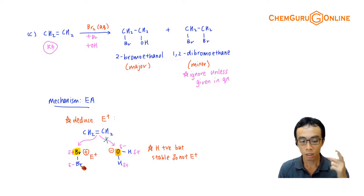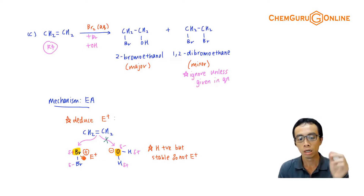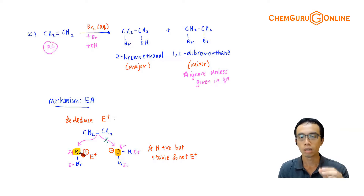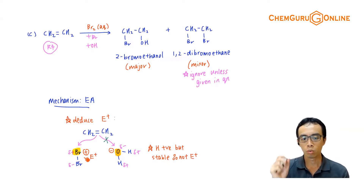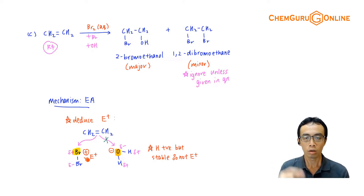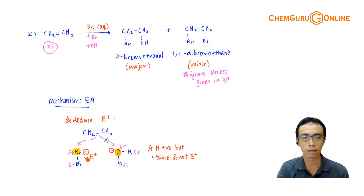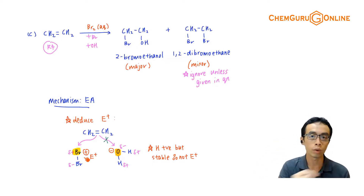So who is the electrophile? The Br minus? That's a negative charge - it doesn't function as the electrophile. The bromine which is delta positive charge - that is the electrophile. So we need to identify the actual atom, or the actual part of the species, that is either the electrophile or nucleophile. So later when you draw the arrow pushing, you know exactly where the arrow should go from and to.